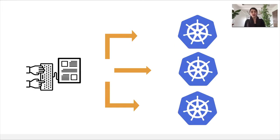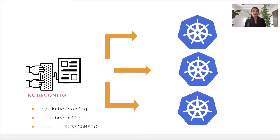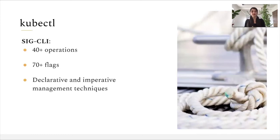We can think about kubectl as a way to close the gap between the end-user terminal and a cluster running locally, in a public cloud, or in a data center. To connect to those clusters, we'll require a kubeconfig file which will have all the metadata necessary, such as the API server endpoint and any authentication data like certificates or tokens. The kubeconfig file can be found in the .kube folder, specified as a flag, or consumed as an environment variable. kubectl is a CLI which currently resides under the Kubernetes community umbrella, offering more than 40 operations — actions we can perform on top of resources such as create, delete, run, get, and many more — associated with more than 70 flags, which allow a tailored and custom experience.